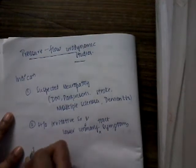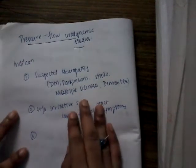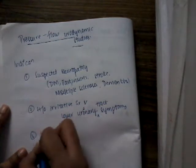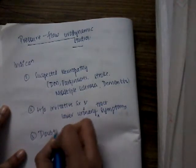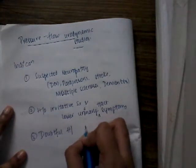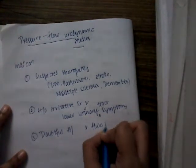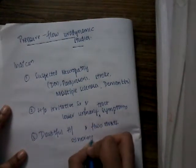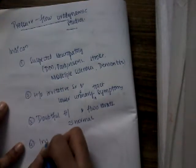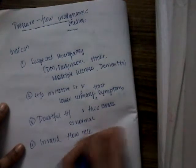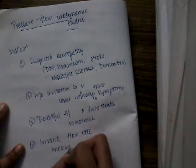Number three: if they have doubtful history and they have some flow rates around normal, approximately normal. In such situations also we do it if they have invalid flow rate measurements.